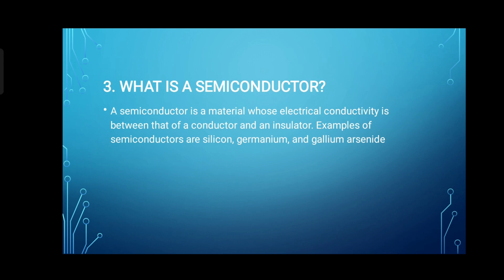3. What is a semiconductor? A semiconductor is a material whose electrical conductivity is between that of a conductor and an insulator. Examples of semiconductors are silicon, germanium, and gallium arsenide.